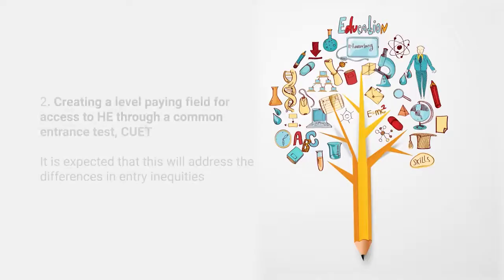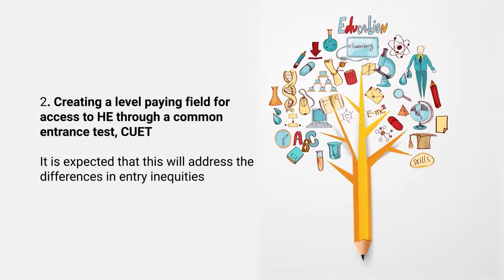The second most important process, already set in by the UGC as part of the proposals of the New Education Policy 2020, is to create a level playing field for access to higher education through a common entrance test — the CUET, the Common University Entrance Test. Previously, we were relying on a large number of entrance examinations or admission procedures based on marks obtained in the school leaving examination, that is 10+2.